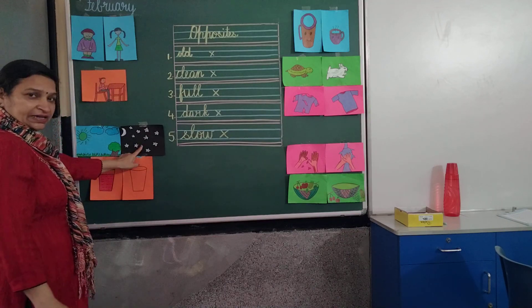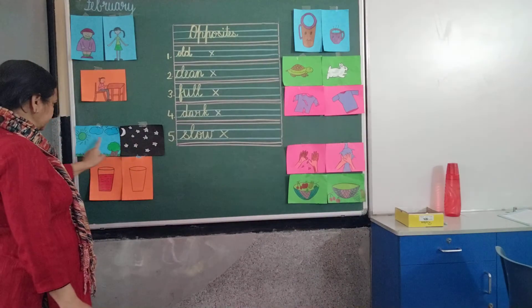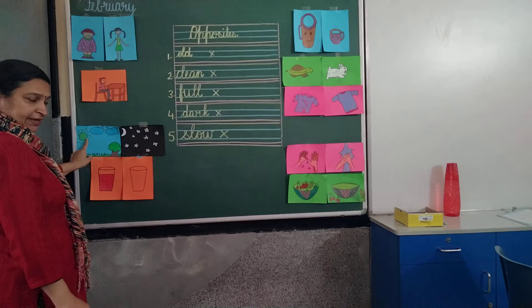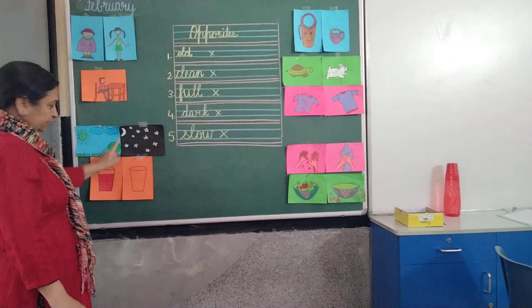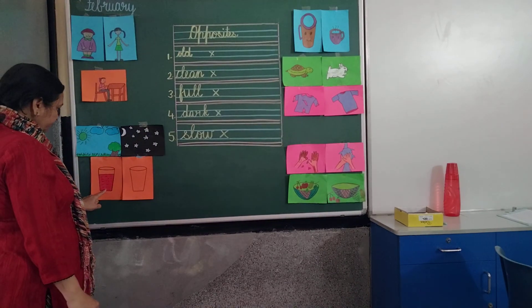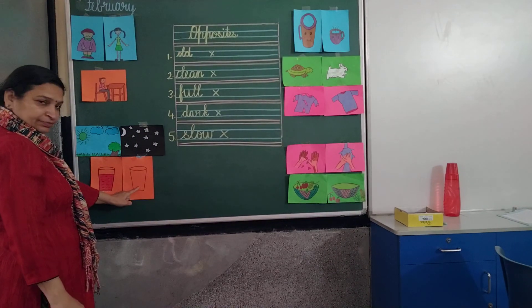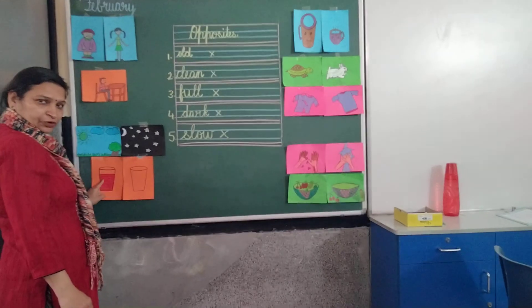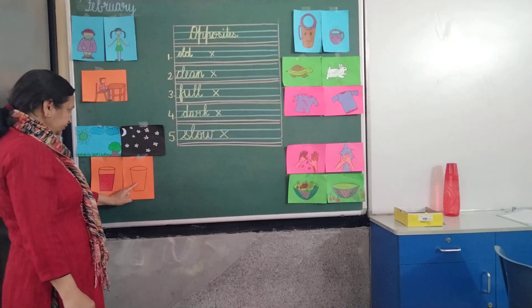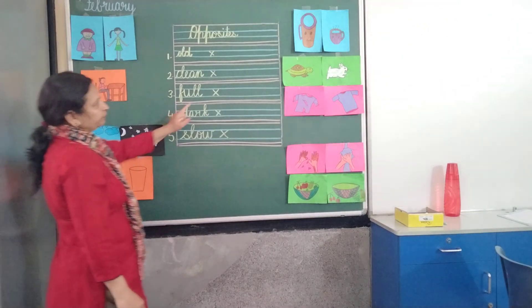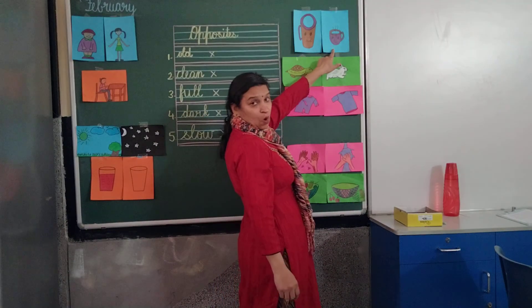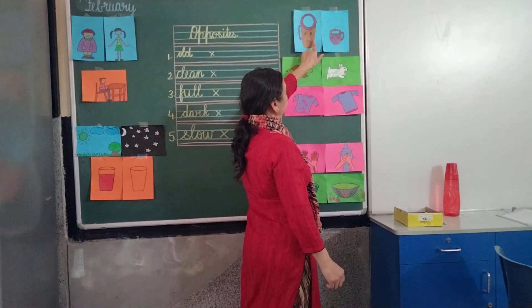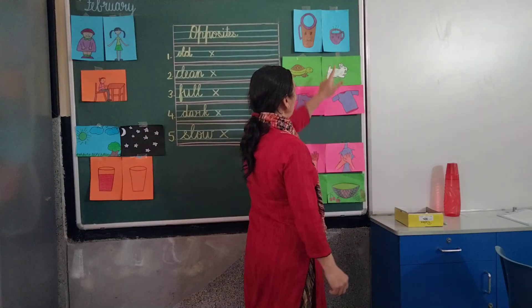Now next: day, night. Sun is there — day. Night — moon is there. Then full, empty — full, empty. Big, small — big, small.